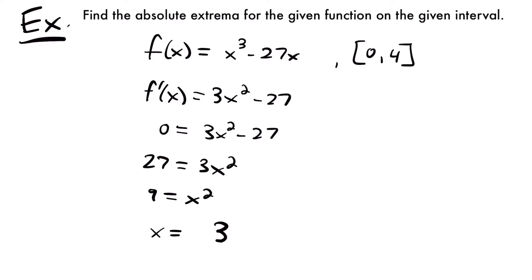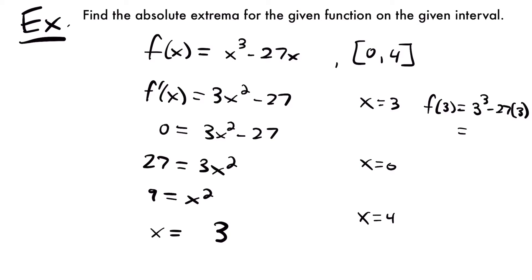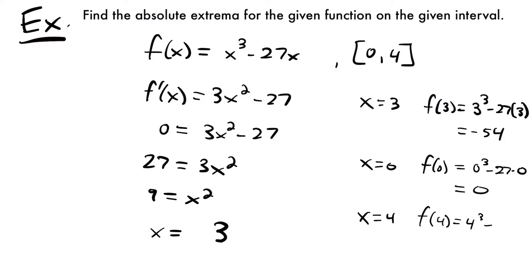So now we have three points to check: our critical number x equals 3, and our two endpoints x equals 0 and x equals 4. Plugging in x equals 3, f of 3 equals 3 cubed minus 27 times 3, which equals negative 54. Plugging in 0, we get 0 cubed minus 27 times 0, which is 0. And plugging in 4, f of 4 equals 4 cubed minus 27 times 4, which equals negative 44.